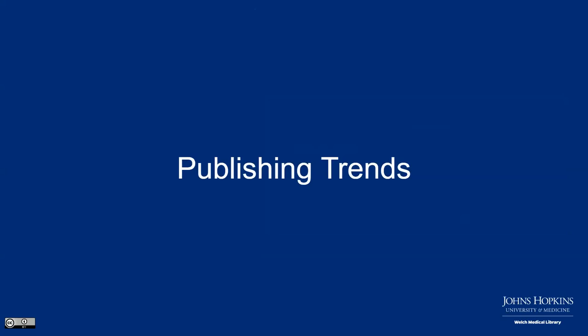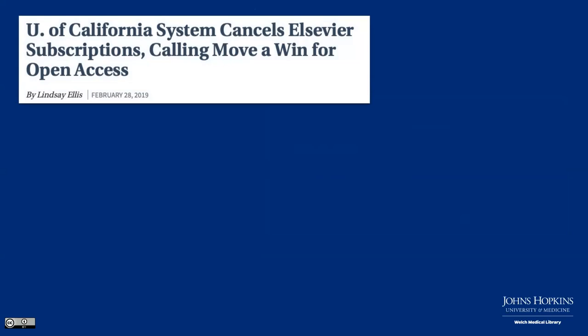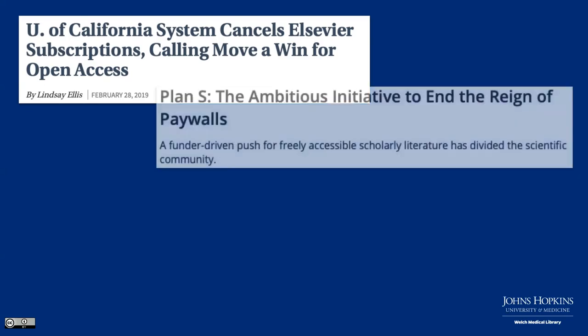Moving on to publishing trends. The University of California system has made news by canceling their Elsevier Science Direct journal subscriptions. What many might not know is that the UC system was trying to negotiate immediate open access to their researchers' work. As of now, they are still unable to reach an agreement and have lost access to moving-forward Elsevier journal subscriptions. There's also the ambitious Coalition S initiative called Plan S, which asks for no-embargo open access with Creative Commons licenses, supported by funders across 12 European countries, plus the Wellcome Trust and Gates Foundation.